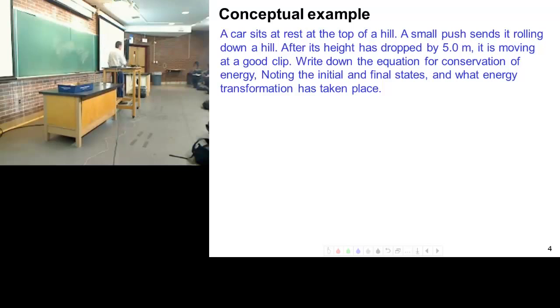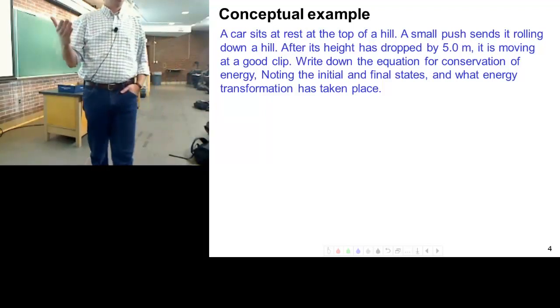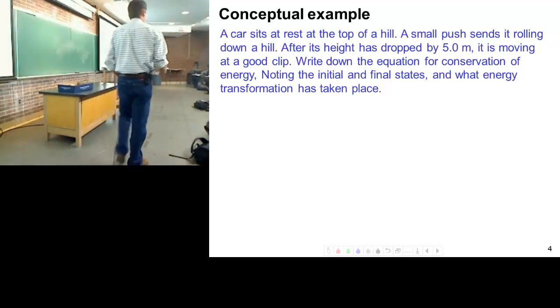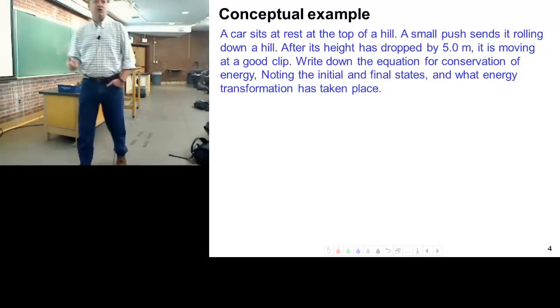We were at this conceptual problem is where we got to last class, at the very end of the class. So the set up is the hardest part of these problems. So here's my situation. I have a car sitting on the top, at rest on the top of a hill. What does that rest mean? Its initial velocity is zero, right? So a car sitting on top of a hill with a velocity of zero. Tiny push sends it rolling down the hill. After it's gone down five meters, it's moving at some speed.